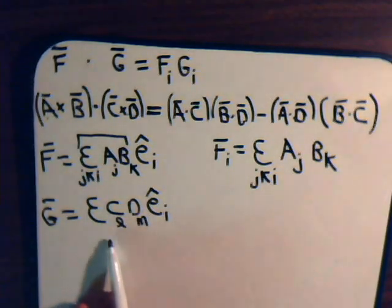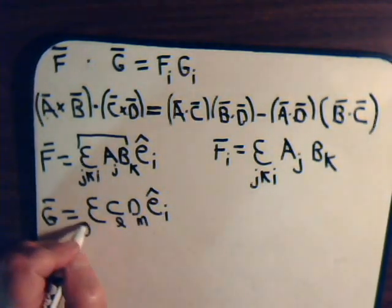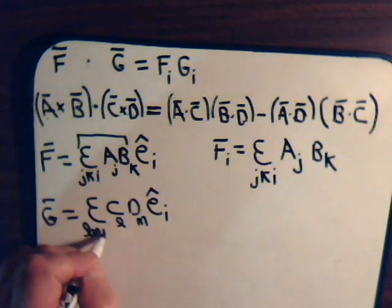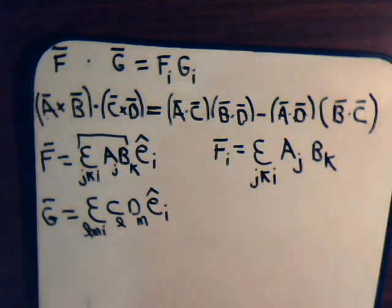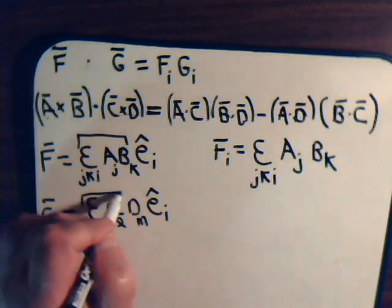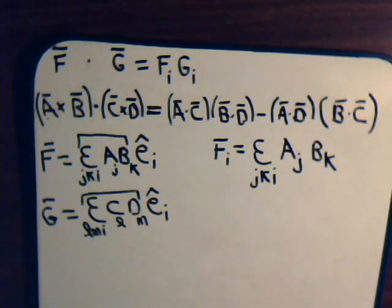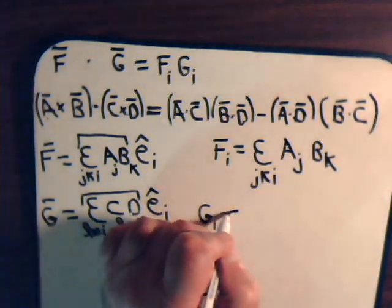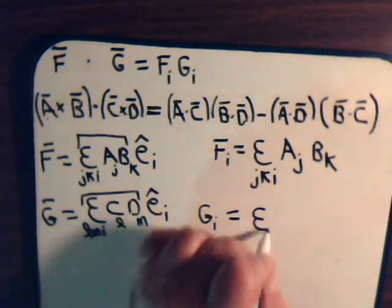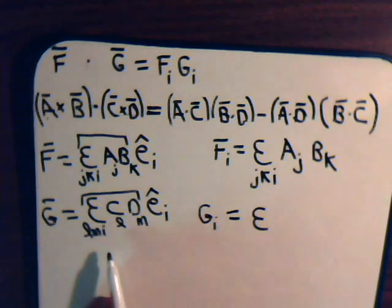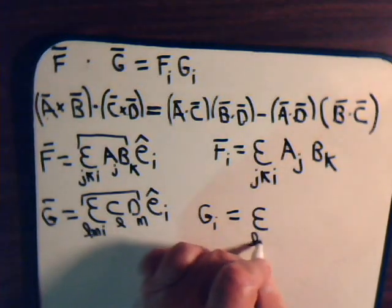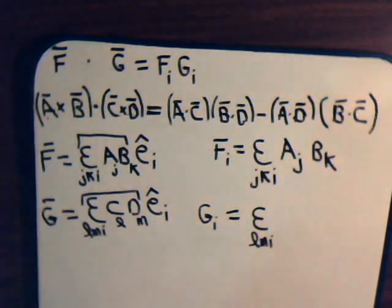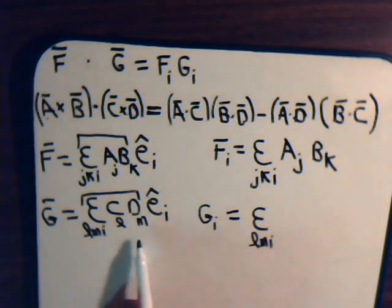So this would be LMI, where this expression, this part of the expression is G sub I, as we've demonstrated in our previous videos. So G sub I equals Epsilon LMI C_L D_M.